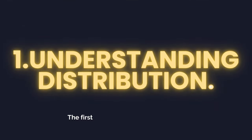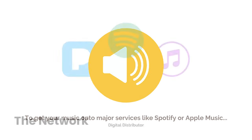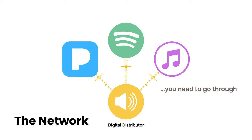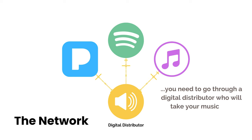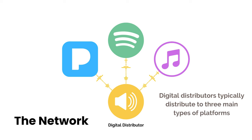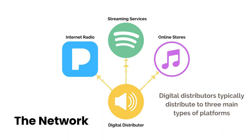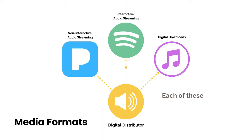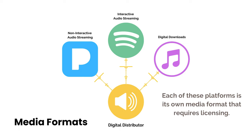The first is understanding distribution. To get your music onto major services like Spotify or Apple Music, you need to go through a digital distributor who will take your music and distribute it to their network of services. Digital distributors typically distribute to three main types of platforms: internet radio, streaming services, and online stores. Each of these platforms is its own media format that requires licensing.